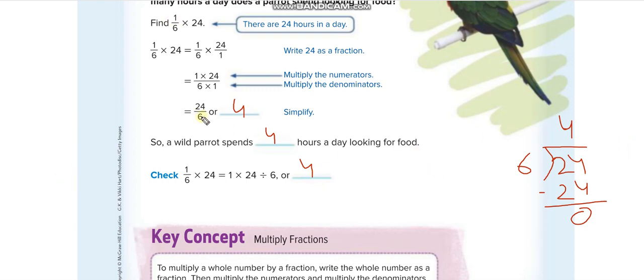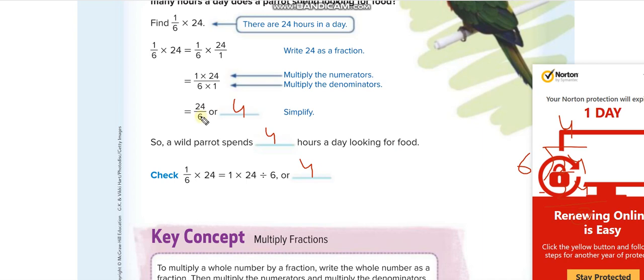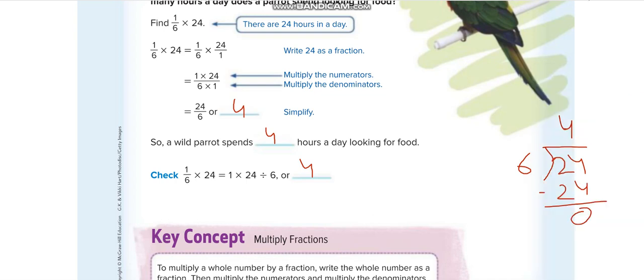The second thing, if you are fast enough in division, you can directly check how many 6 you can take out from 24. 6 times what will give you 24 or less than that? That is 6 times 4. Let us move to the next page.